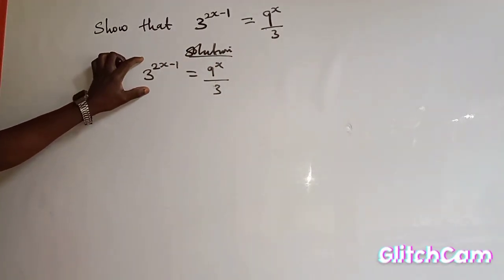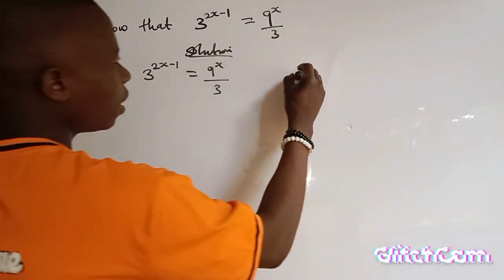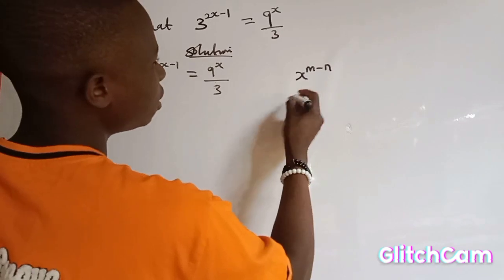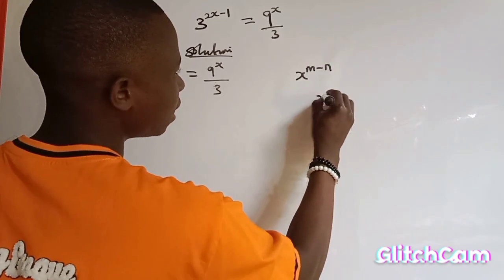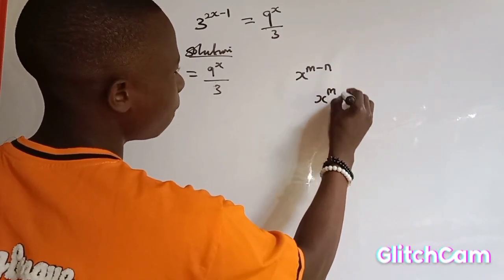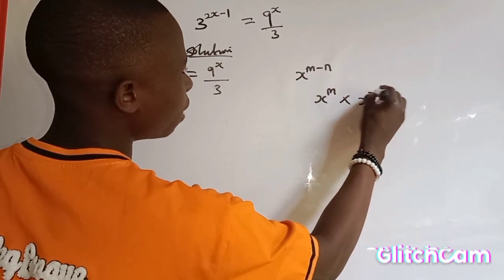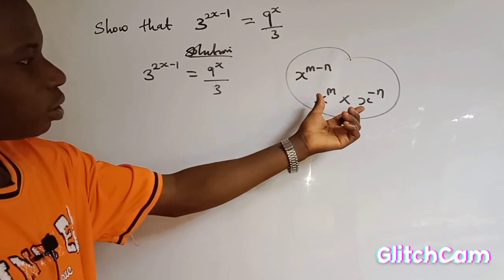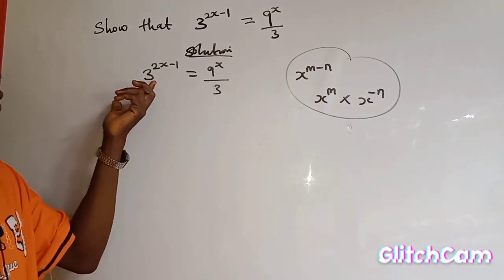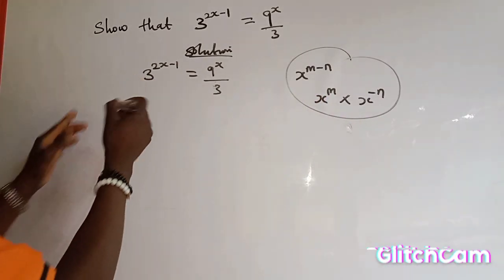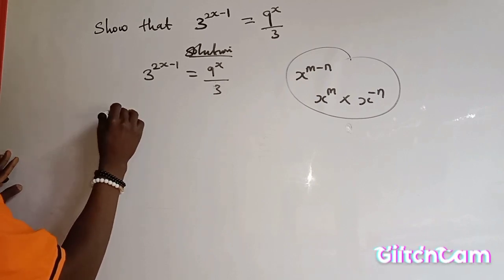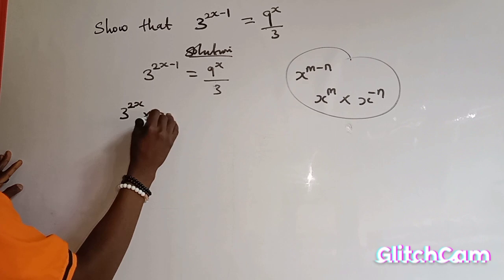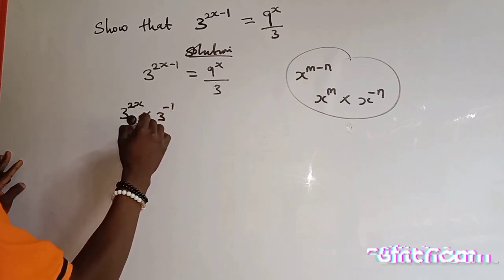On the left hand side, remember if you have s to the power of m minus n, it is the same as s to the power of m multiplied by s to the power of minus n. So we are going to use this rule and apply it to this left hand side. So 3 to the power of 2s minus 1 is going to be written as 3 to the power of 2s multiplied by 3 to the power of minus 1.